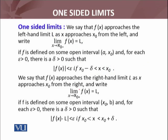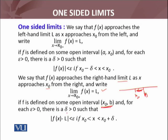Similarly, for the right-sided limit: we say f(x) approaches the right-hand limit L as x approaches x₀ from the right, written as x → x₀⁺, and f(x) = L. If f is defined on some open interval (x₀, b), for each ε > 0 there is a δ such that |f(x) - L| < ε, whenever x₀ < x < x₀ + δ. Here b corresponds to x₀ + δ. This is how we formally define the left-sided and right-sided limits.